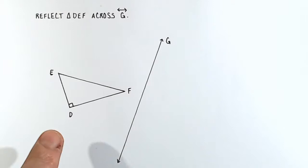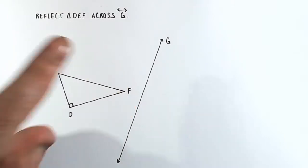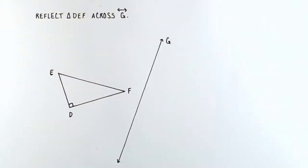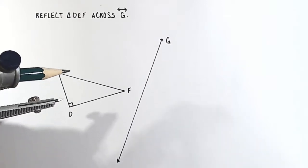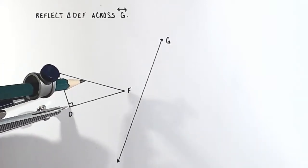So here I am given triangle DEF, and I'm asked to reflect that across line G. So what I'm going to do is reflect each of the points one at a time. And I'll start with point D.